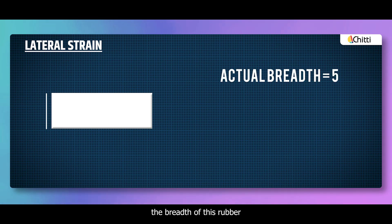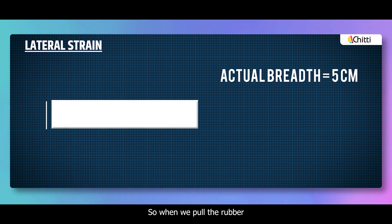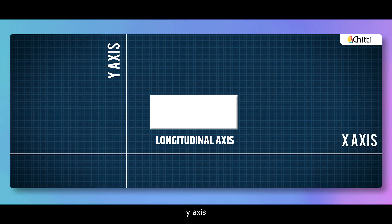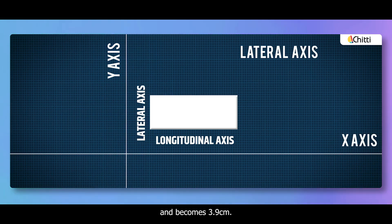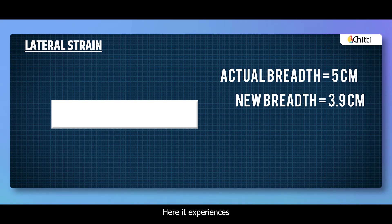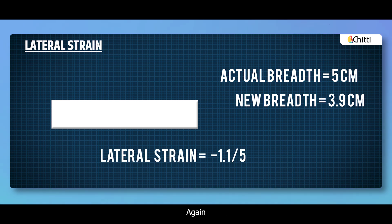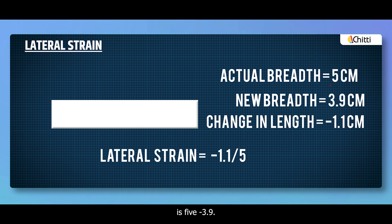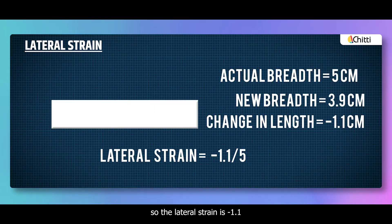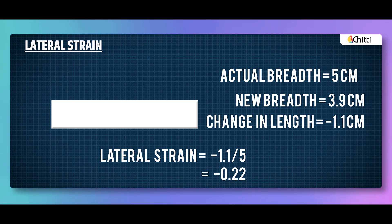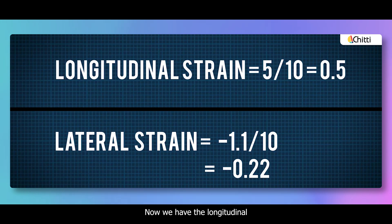The breadth of this rubber is 5 cm. So when we pull the rubber, it gets thinner in the y-axis or the lateral axis and becomes 3.9 cm — here it experiences lateral strain. Again, strain is the change in length by original length. So the change in length is 5 minus 3.9, that is minus 1.1 cm. The minus sign here indicates the decrease in length. So the lateral strain is minus 1.1 divided by 5, that is minus 0.22.